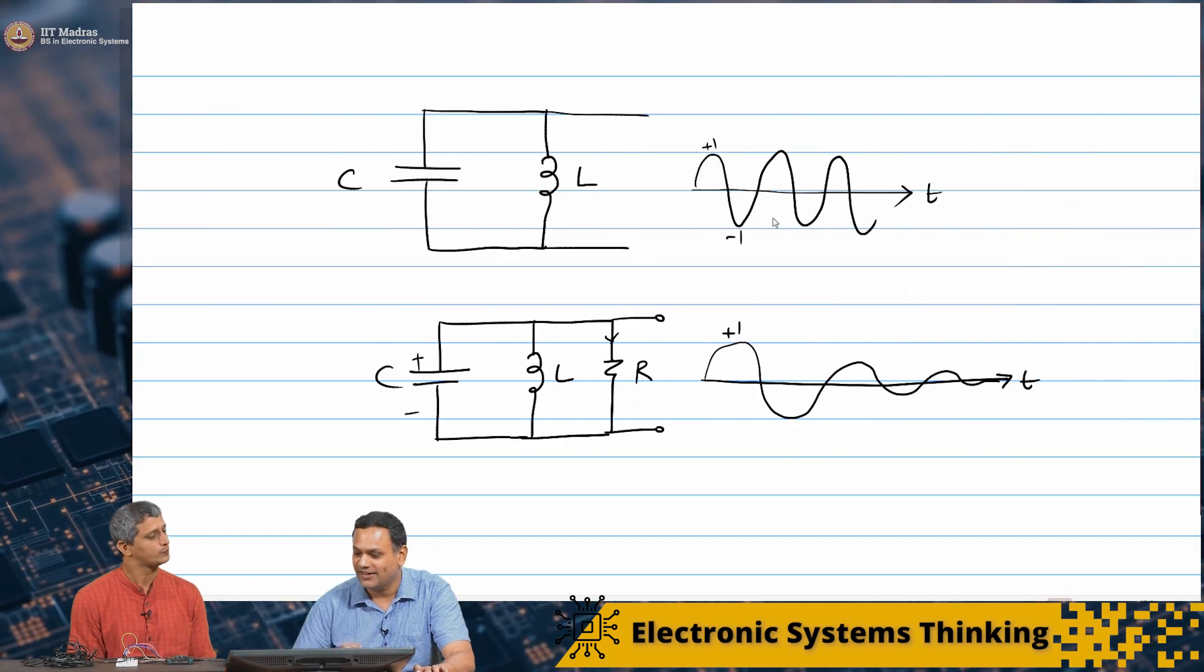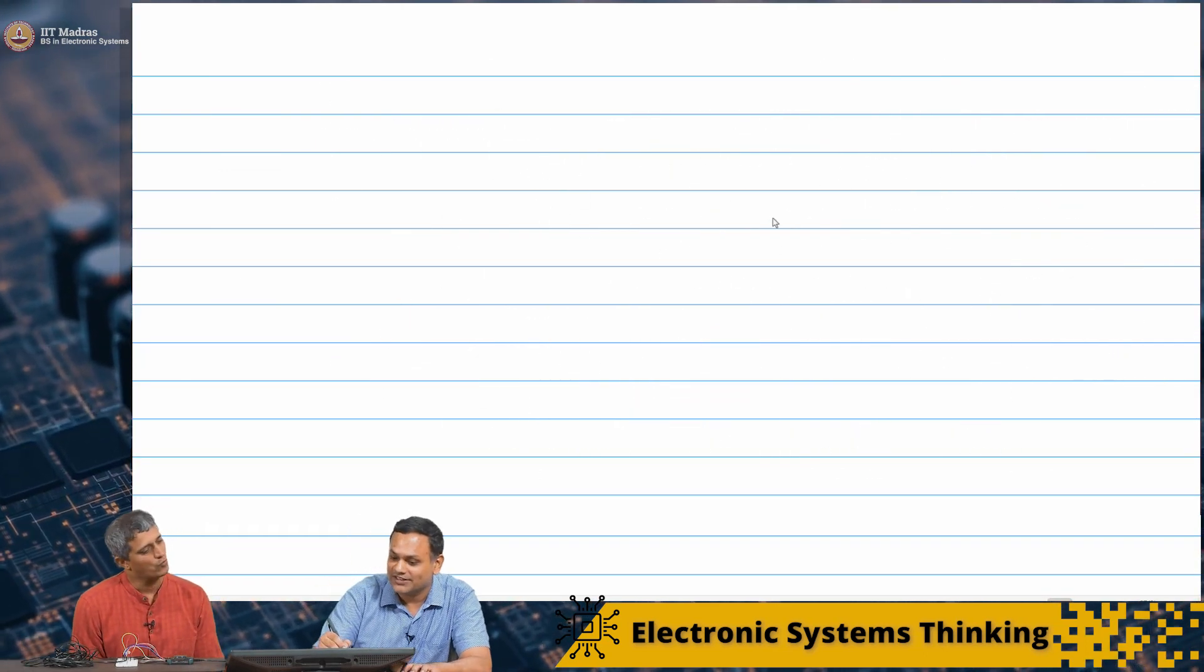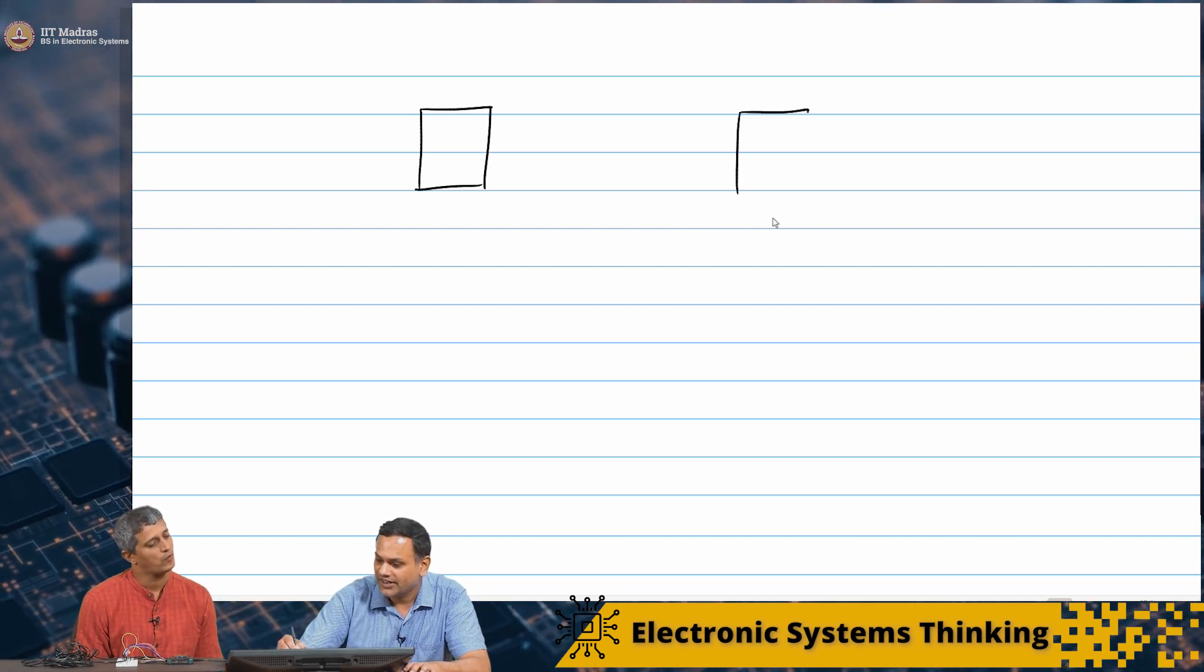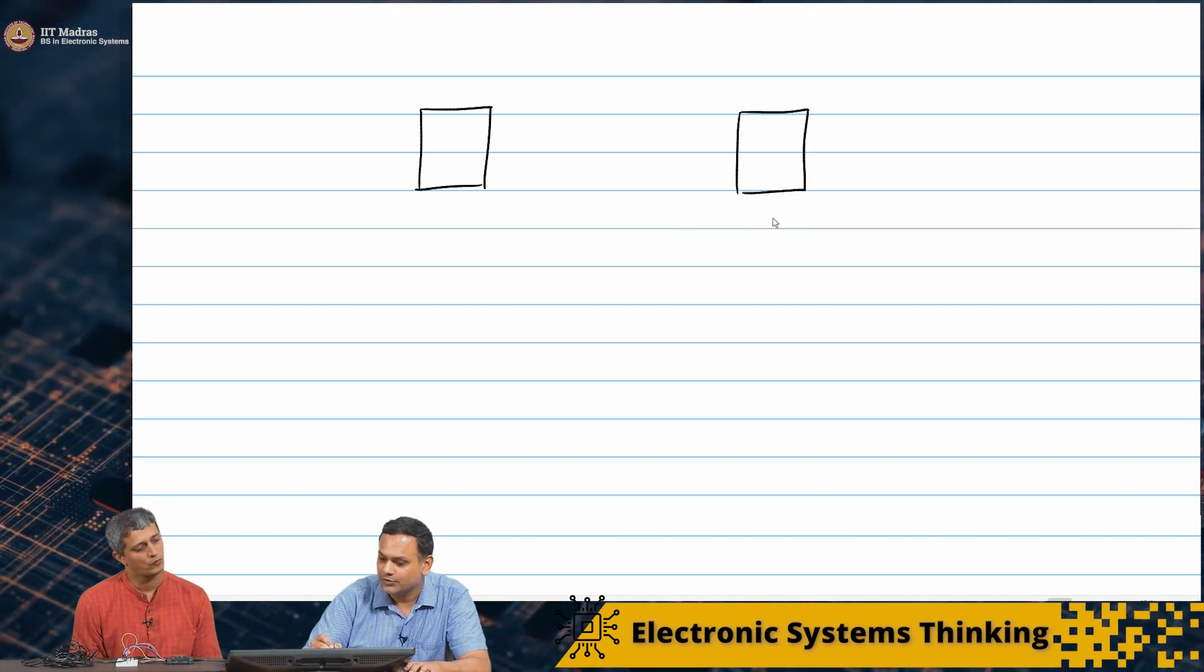Either I put thousands of wires if I want a lot of communication to happen in parallel. That is right. Or I put one wire and send them serially. You have different types of communication, wired communication.